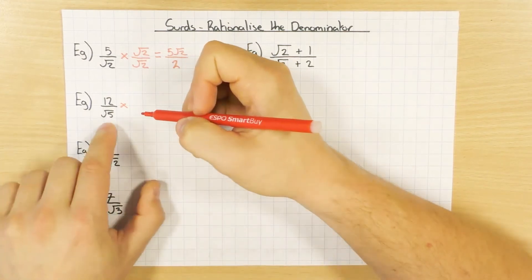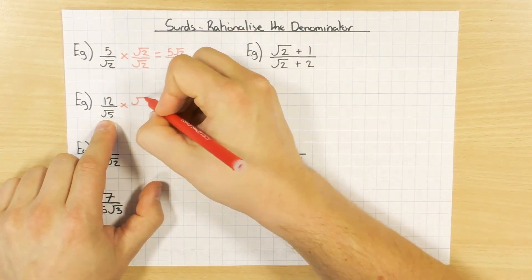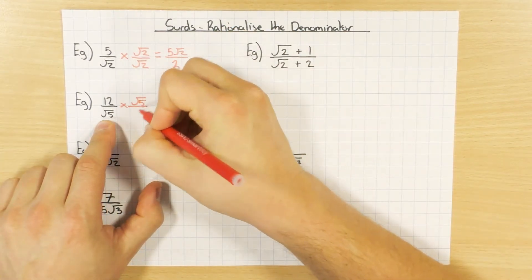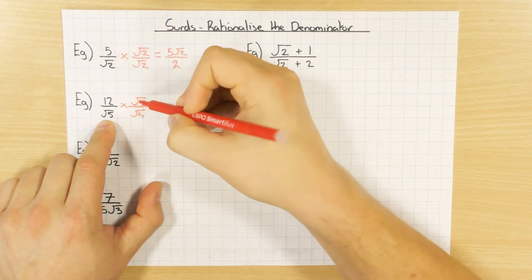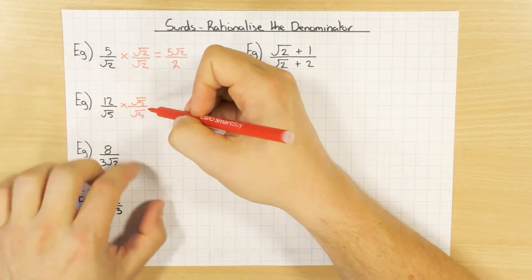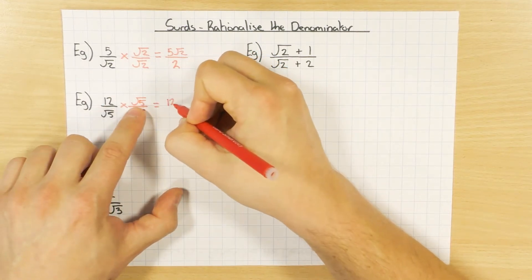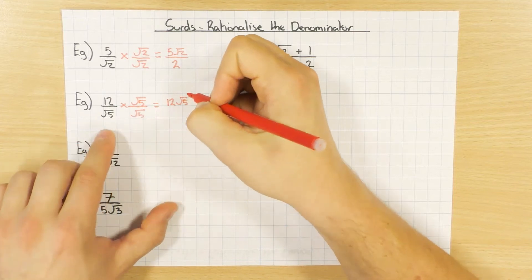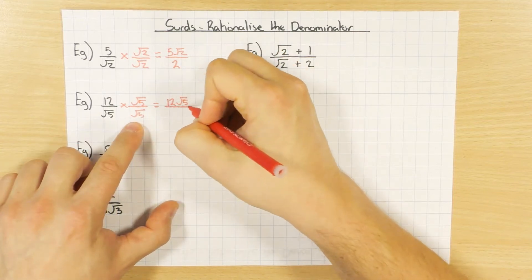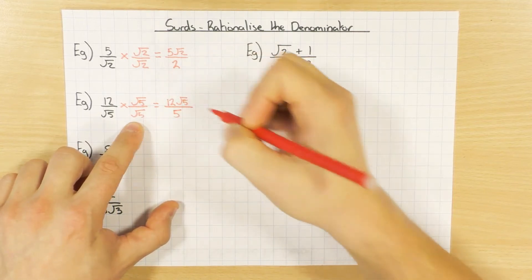Let's now go to this one then. So this time I've got root 5 on the bottom, so I'm going to times by root 5 divided by root 5. So again, root 5 divided by root 5 is just the same as timesing it by 1, which is why I'm allowed to do it. 12 times root 5 is just 12 root 5. Root 5 times root 5, using that rule again, is just going to give me 5.